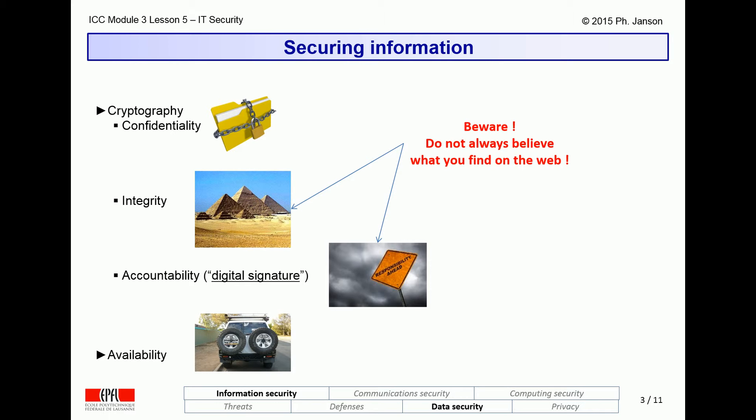As you enter the world of engineering, you should always keep in mind that the vast majority of the information on the web is neither integrity protected nor digitally signed, which means that its source is not formally identified and its content not necessarily truthful. The next video clip will also survey briefly mechanisms for ensuring the availability of information, which is related to its integrity.